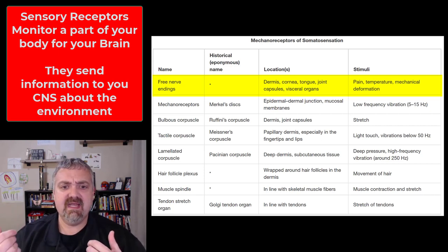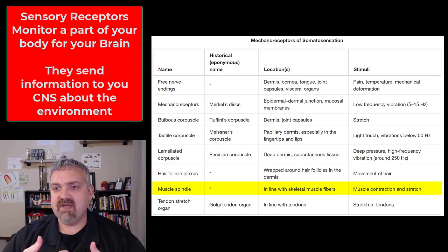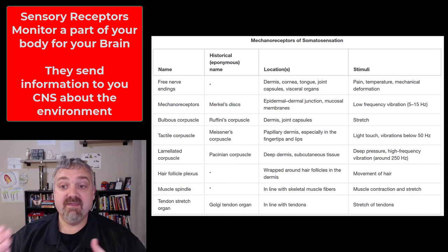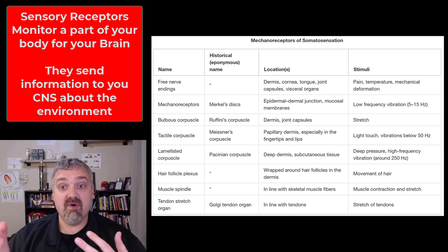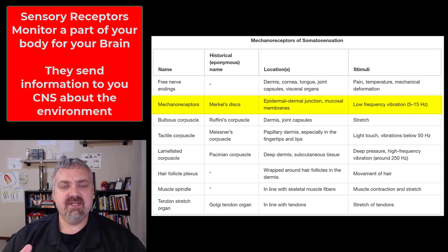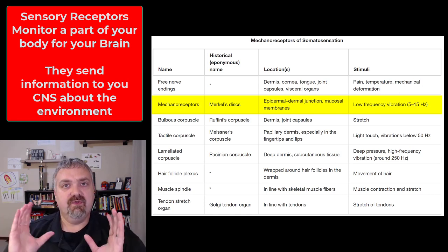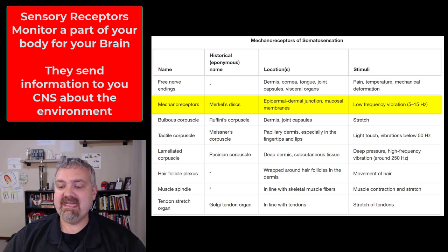A couple more examples: muscle spindles respond to or sense muscle contraction and stretching. You'll notice that several receptors respond to different frequencies of vibration, so there's a lot more vibration sensation than you might think. We'll cover mechanoreception later. I'm not asking you to know this full list of receptors — these would be your general sense receptors — and we'll talk about your special sense organs later.